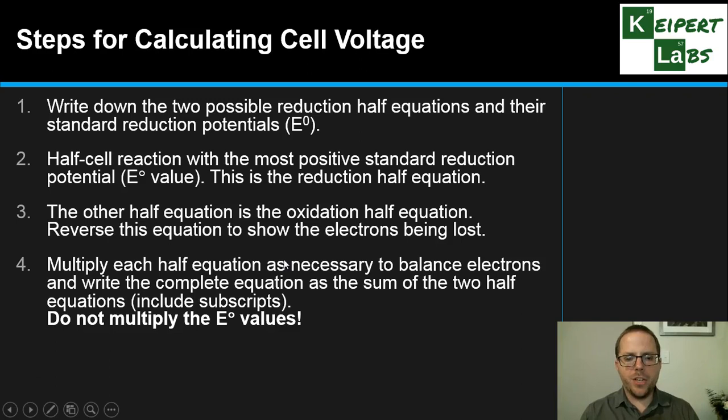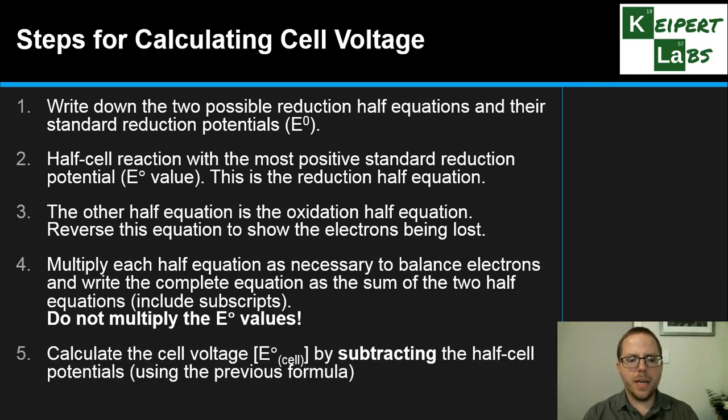We'll multiply each half equation as necessary to balance out the electrons, so that all the electrons are canceled out, and then we can combine the two halves to make a complete equation, including subscripts. But really important: do not multiply the E° values. The idea is that you only multiply the coefficients just to get the mole ratios to work out, but the E° is an innate property of two combinations. It's not dependent on molarity or the exact number of moles. Then we can calculate our cell voltage by subtracting the half cell potentials.